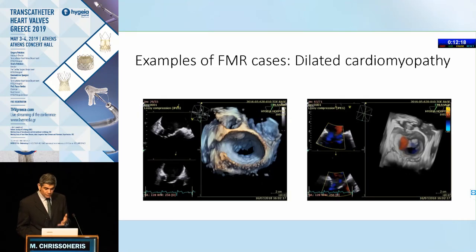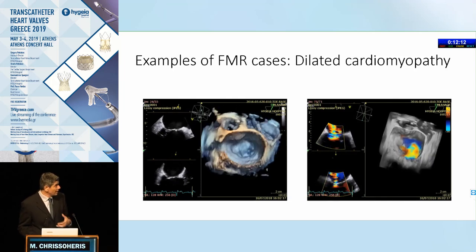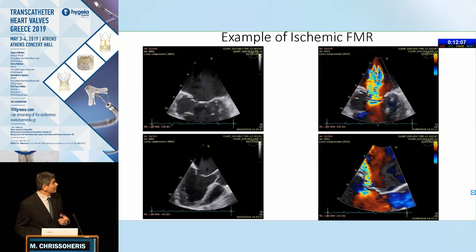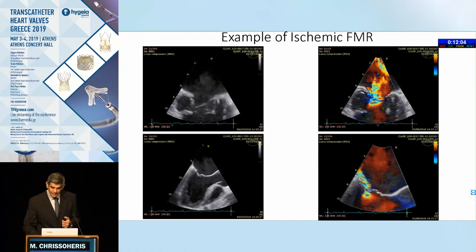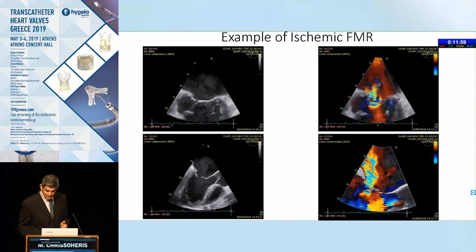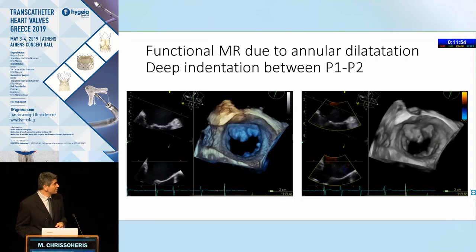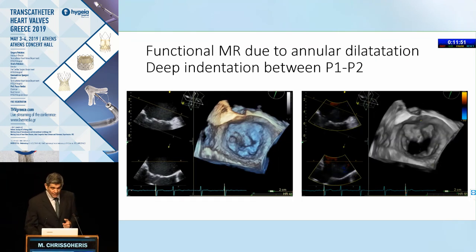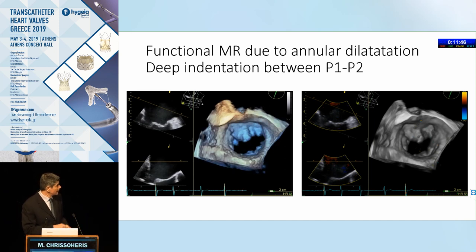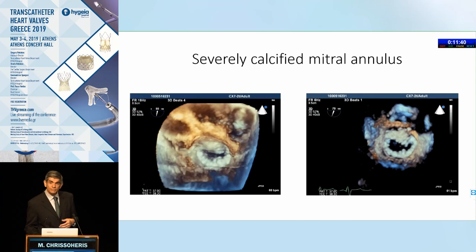The same applies to patients with dilated cardiomyopathy or ischemic cardiomyopathy. We can get multiple information from 3D echocardiography as to the location of the jet of MR. In this patient with ischemic MR, we can ascertain whether there's asymmetric tethering of the leaflets with a typical posterior jet direction. We can also see whether there are any indentations or clefts — for instance, a deep indentation between P1 and P2 on the posterior leaflet — a very relevant piece of information for the surgeon.